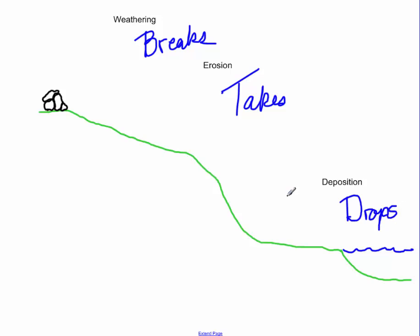If we have this boulder up here on top of the hill, and it starts to rain on it, maybe there are some cracks in the boulder, and slowly some of that rainwater gets into those cracks. It freezes, and as water freezes it expands — we call that ice wedging. Eventually because of that ice wedging, the rock starts to break and fall into different pieces, and this piece breaks free, and this piece breaks free.